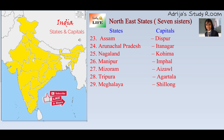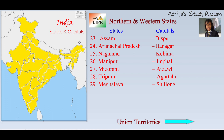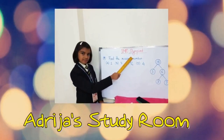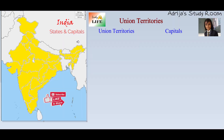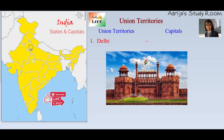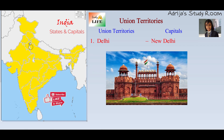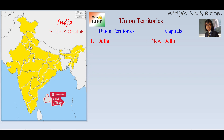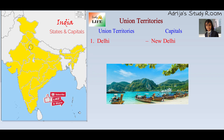We have completed the states of India and learned their capitals. Now let's learn about the union territories and their capitals. The first union territory is Delhi, and its capital is also New Delhi. This is the capital of India, and it is also a union territory.